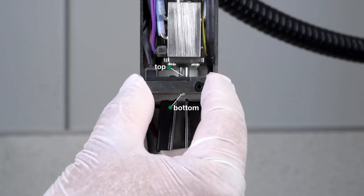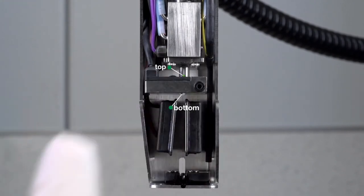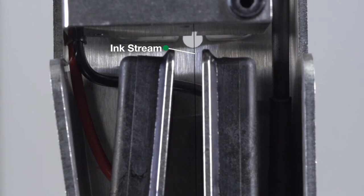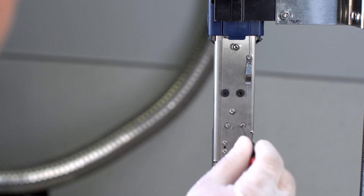Using your fingers, gently adjust the charge electrode so that the ink stream flow is in the middle, center of the charge electrode both on top and bottom as shown. Once complete, lock the charge electrode screws in place.